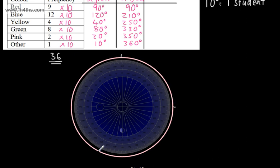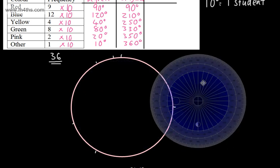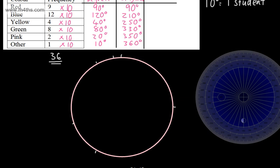I then come around to 210 degrees, then to 250 degrees, then to 330 degrees, then to 350 degrees, and then I'm back at the start. Now I locate the centre of the circle and connect all the lines up to draw the sectors.